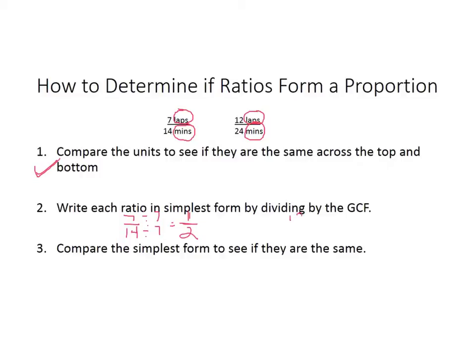Let's do 12 over 24 and reduce that. Well, if we reduce by the greatest common factor of this, it would be 12. And you would also get 1 half. That means at that rate, they are running 1 lap every 2 minutes.